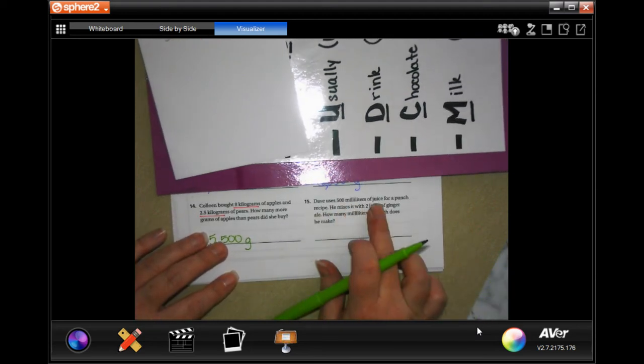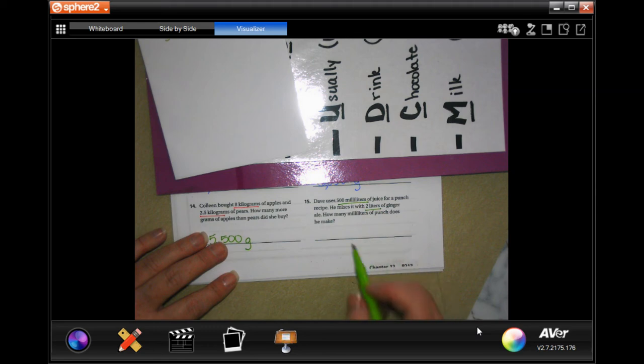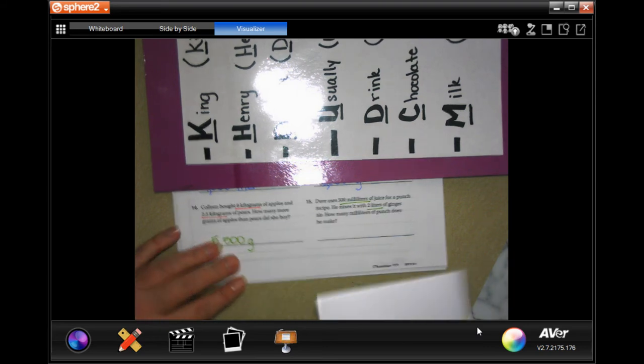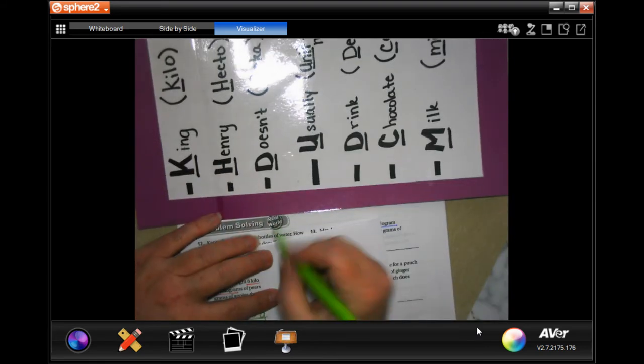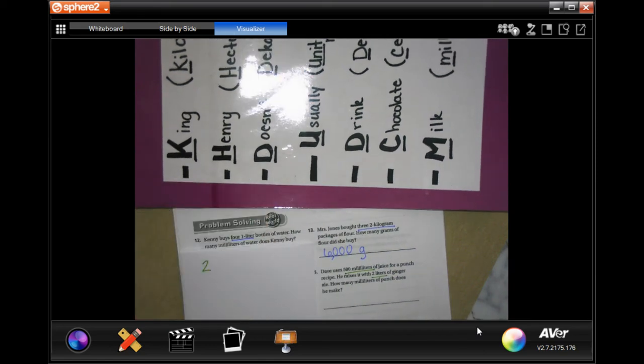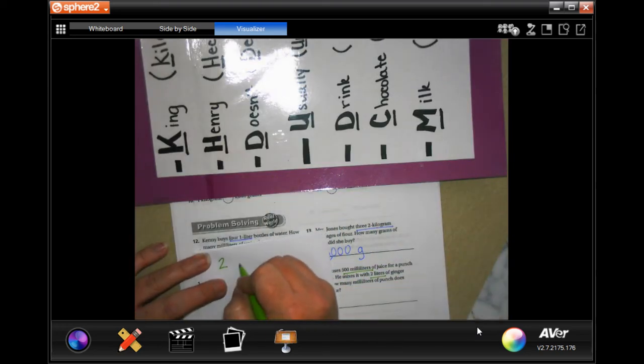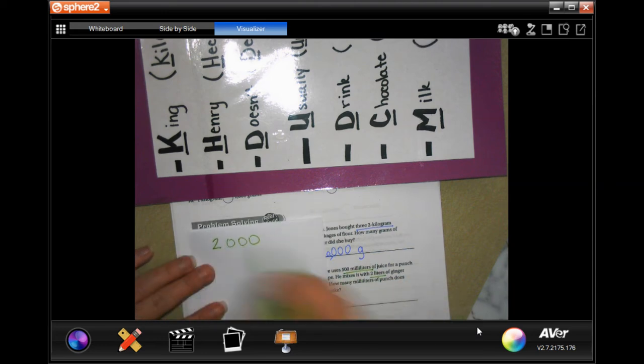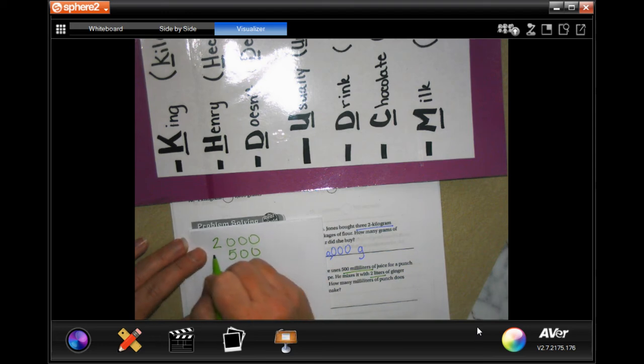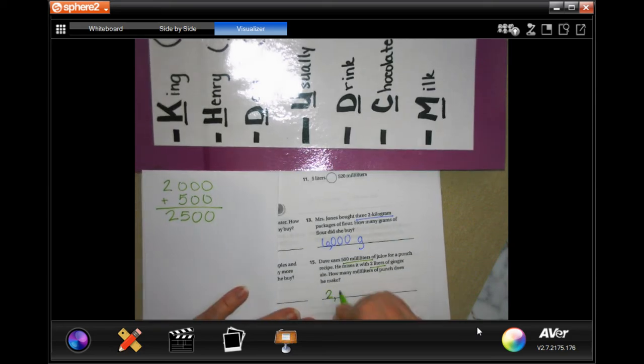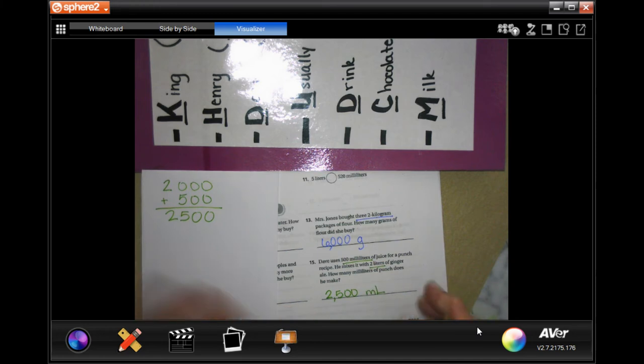Dave uses 500 milliliters of juice for a punch. He mixes it with two liters of ginger ale. How many milliliters of punch does he make? Well, let's go from liters to milliliters for the two. Whatever it is, we're going to have a two for our first one, and we're going to go from liters to milliliters. Liters to milliliters, one, two, three. So one, two, three - that gives us three zeros. Plus the 500 milliliters, add them up.